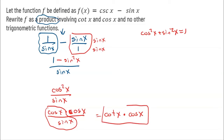So I was able to rewrite this difference — cosecant minus sine — into a product of cotangent and cosine. Pretty tricky to do, but hopefully you understand how I used those identities.